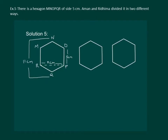Let us read the next question. There is a hexagon MNOPQR of side 5 cm. Amman and Riddhima divided it in two different ways — find the area of this hexagon using both ways. Riddhima divided the hexagon by joining points M to O and R to P, while Amman divided it by drawing a line from N to Q.